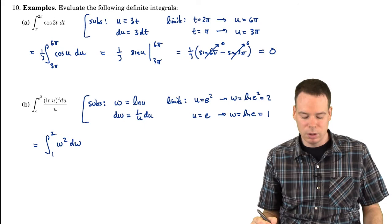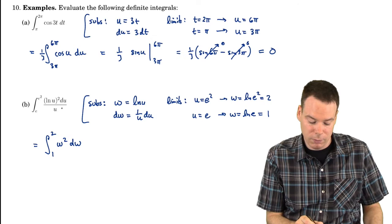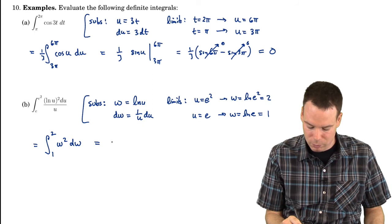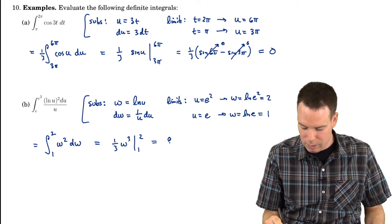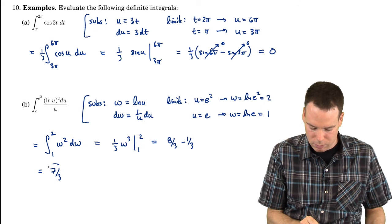And look at that. So our original integral, which maybe looked fairly complicated, has now boiled down to this integral, which looks really straightforward. So it's 1 third w cubed from 1 to 2. So that's 8 thirds minus 1 third or 7 thirds. And so there is our result.